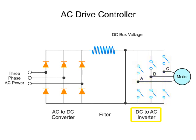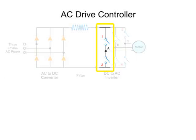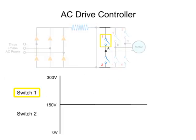In a typical three-phase frequency inverter, there are six switches with a pair of switches for each phase. In each pair of switches, one switch generates the up component of the sine wave and the other generates the down component.